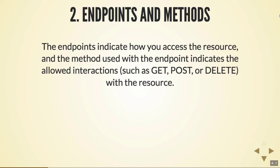The second section is endpoints and methods. Endpoints indicate how you access a resource, and the method used with the endpoint indicates the allowed interaction — GET, POST, DELETE — with the resource. The endpoint is that definition you pasted into Postman. Literally, endpoint is kind of like the end path: you have a base path used for all calls, and the only thing that's different is the endpoint or path. The method refers to the operation: are you creating something new, just getting something read-only, deleting something, or updating an existing thing? Most common methods are GET, POST, PUT, and DELETE — corresponding to CRUD: create, read, update, delete.